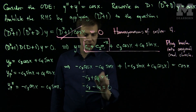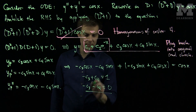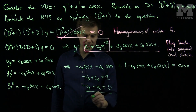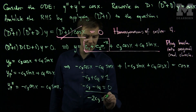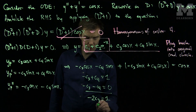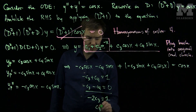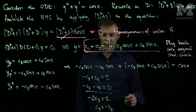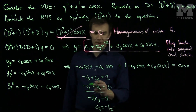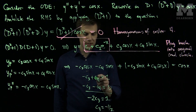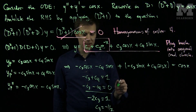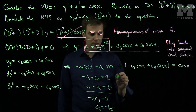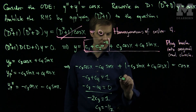Together, these equations can be solved by adding them. Adding gives −2c₃ = 1, which tells us c₃ = −1/2. If c₃ is −1/2, then from the other equation c₄ must be positive 1/2.